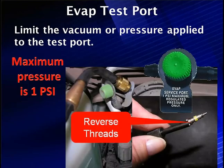Let's talk about this test port again. It says we are only allowed 1 psi maximum regulated pressure. Notice we have reverse threads on this — don't damage the Schrader valve when you take it out. You're going to have to take it out, hook up your smoke machine, and other things for testing.